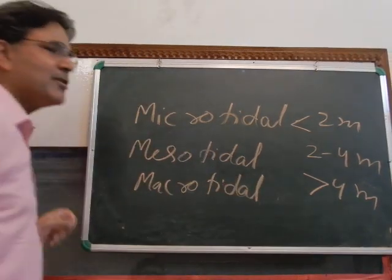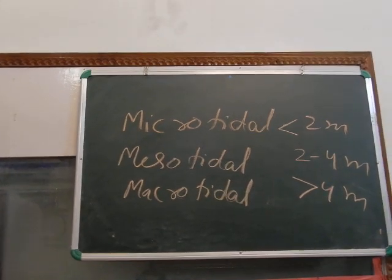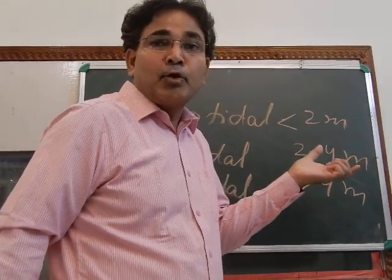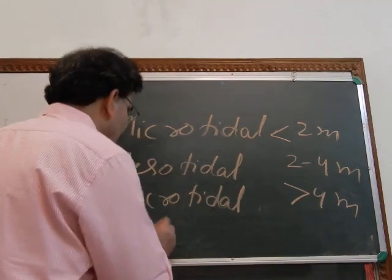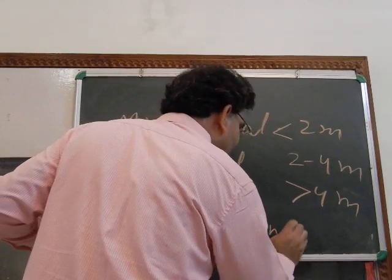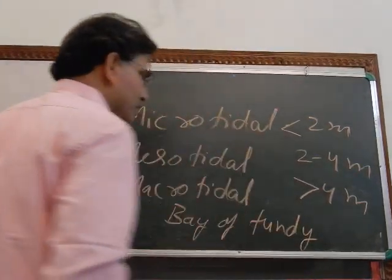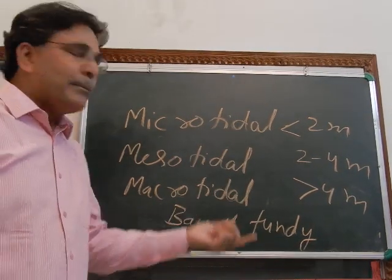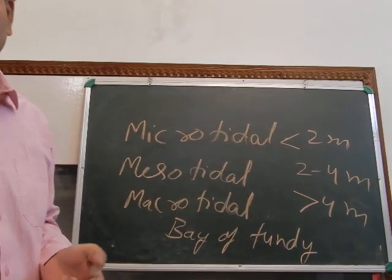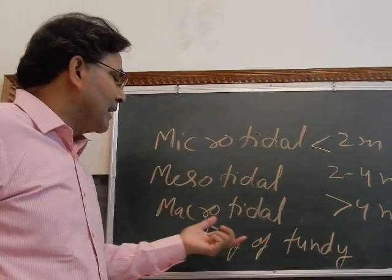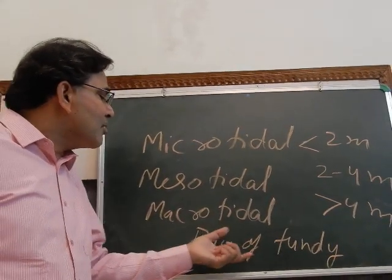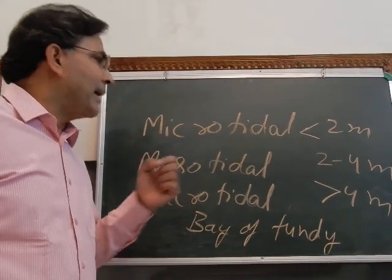In some regions the tidal range is very high — up to 15 or even 20 meters. The most famous example is the Bay of Fundy in the Atlantic Ocean, where the water during tides rises up to 10, 15, or even 20 meters. The tidal range is maximum in the case of the Bay of Fundy.